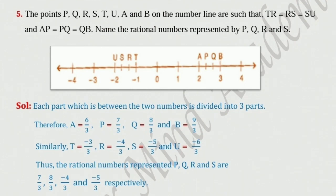Sum number 5. The points P, Q, R, S, T, U, A and B on the number line are such that TR is equal to RS is equal to SU and AP is equal to PQ is equal to QB. Name the rational number represented by P, Q, R and S.